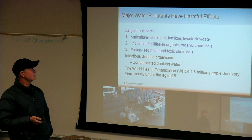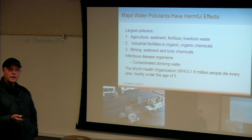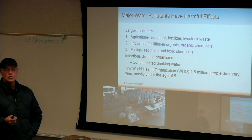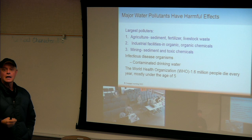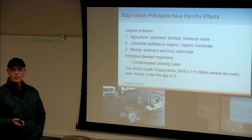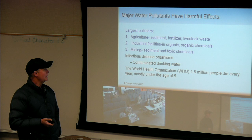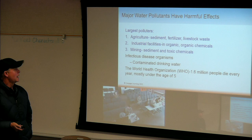Major water pollutants have harmful effects. What are the largest polluters? Agriculture — it could be sediment. If we don't manage soil properly and it erodes, that's a pollutant. What's causing a lot of the breakdown and destruction of our coral reefs is actually sediment — fine sand and clay particles, silt — that is literally drowning out those coral reefs. Livestock waste is another — we'll look at how they manage that at the dairy we visit on May 1st. Industrial facilities can produce organic or inorganic pollutants. Mining can produce sediment and toxic chemicals.